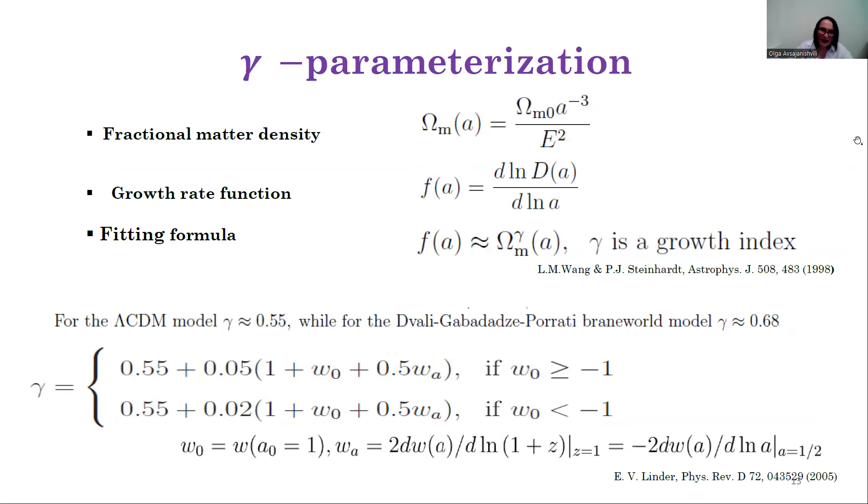Wang and Steinhardt identified a power-law relationship between the fractional matter density and growth rate. The γ factor is a growth index. The value of γ depends on the chosen theory of gravity. For the ΛCDM model, its value equals 0.55, while for the Dvali-Gabadadze-Porrati braneworld model, it is 0.68. Eric Linder has offered fitting expressions to parametrize the γ factor for φCDM models.